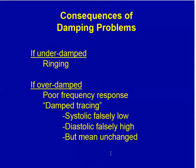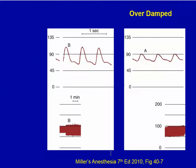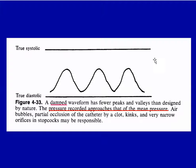If the system is under-damped you get ringing, and if it's over-damped you get poor frequency response — systolic pressure is falsely low, diastolic pressure is falsely high, but mean arterial pressure should be unchanged. Here is an illustration of a properly damped system versus an over-damped system, showing that displayed systolic is lower than true and diastolic is higher than true, but the mean is about the same.